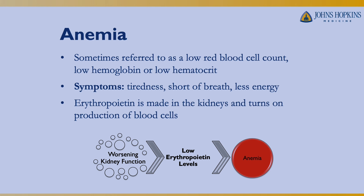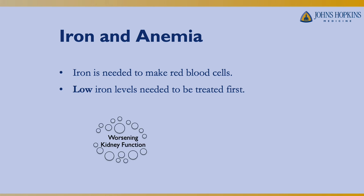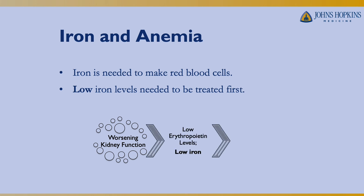Iron is a key component of making blood cells, and you need enough iron stores to make them. Low iron levels need to be treated first whenever someone has kidney issues. So worsening kidney function, a low erythropoietin level, and low iron levels all contribute — and we start by treating the iron levels to begin treating the anemia.